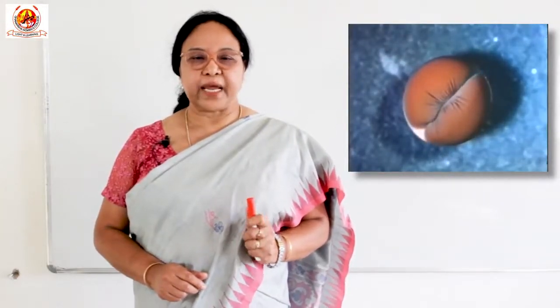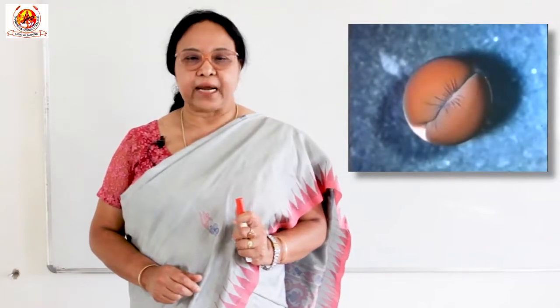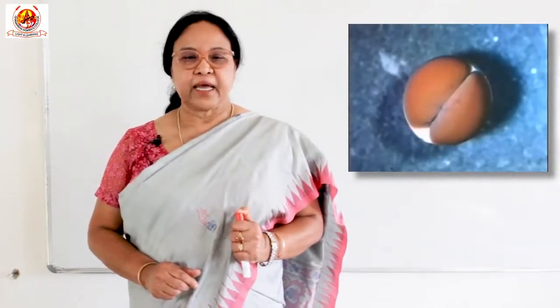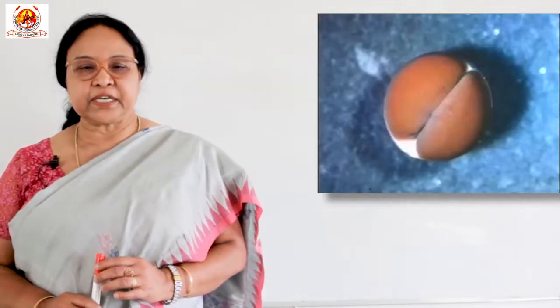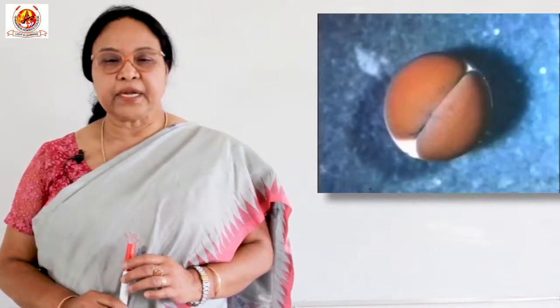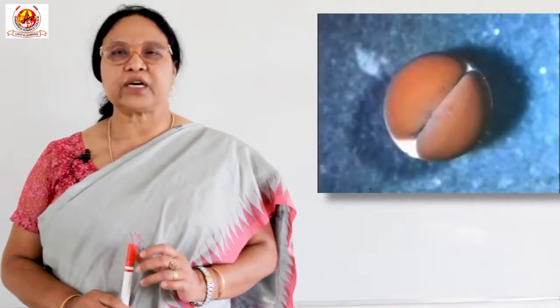The first cleavage plane is meridional and divides the egg through its median animal-vegetal polar axis and results in the formation of two equal size blastomeres. The second set of cleavage divisions is also holoblastic, equal and meridional but at right angles to the first plane.